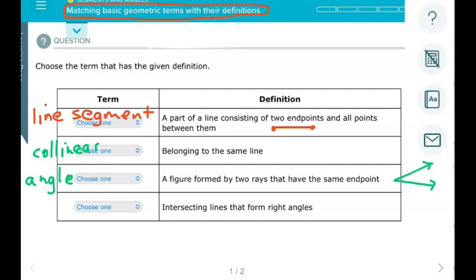And then this last one - intersecting lines that form right angles. So maybe like a vertical and a horizontal line, these are called perpendicular lines.